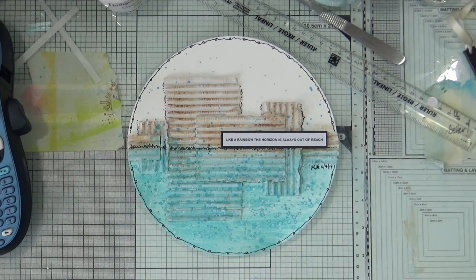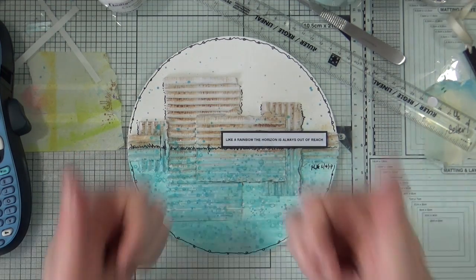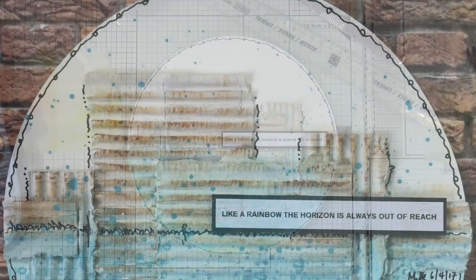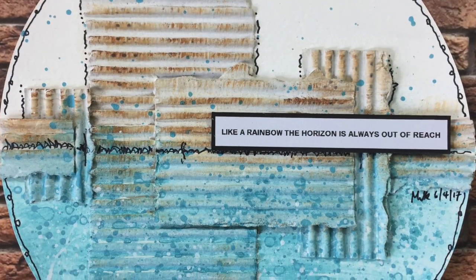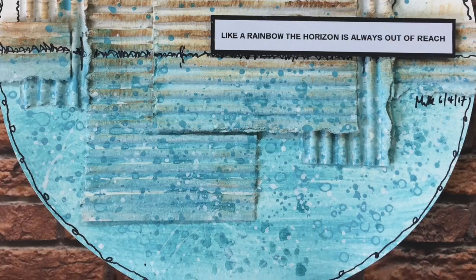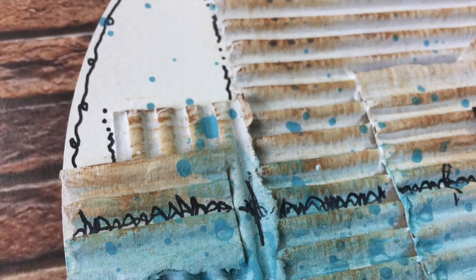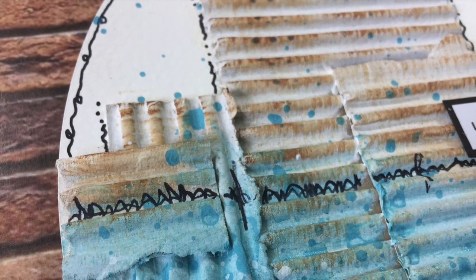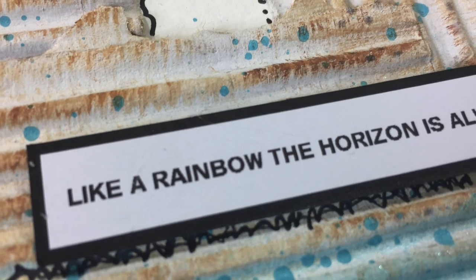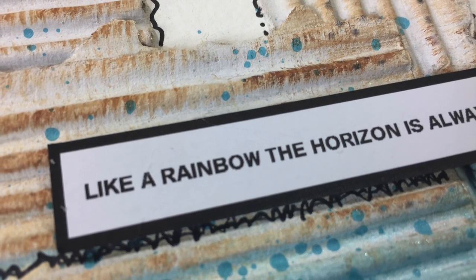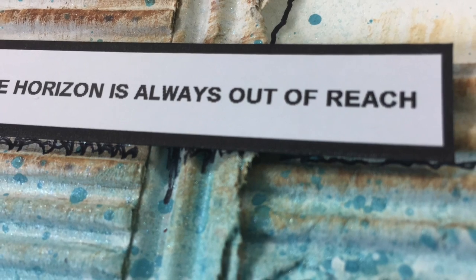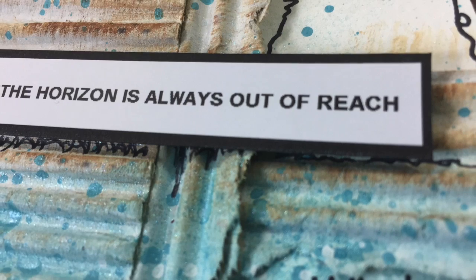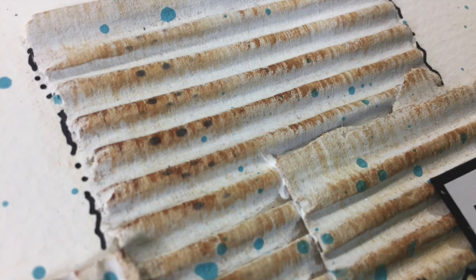That's it, job done for week 14 on Journal 52. I hope you've enjoyed watching this fairly simplistic art journal page come together. You don't really need a lot of layers to get some good effects. Using texture like the corrugated cardboard is a great way to create an art journal page and use up some of your scraps too.